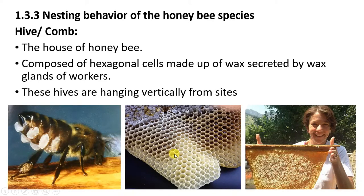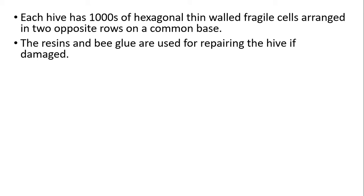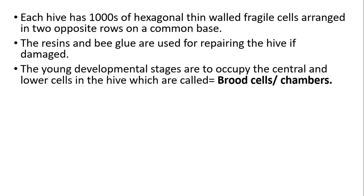The hive is always hanging downward from a tree branch. When we see the hive, there are thousands of hexagonal cells — very delicate, fragile cells arranged in two opposite rows on a common base. If the hive gets damaged, it can be repaired using resins and bee glue. Resins are sticky organic substances exuded from trees, and bee glue is formed by mixed saliva, beeswax, and resins.